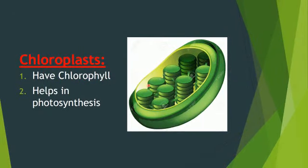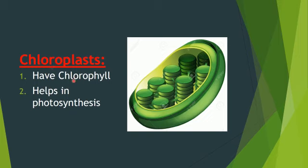Now you are looking at a disc-like structure called the chloroplast. Chloroplast is a unique characteristic found only in plant cells and is absent in animal cells. It is the organelle that contains a green pigment called chlorophyll. Chlorophyll helps in the process of photosynthesis by trapping sunlight energy.